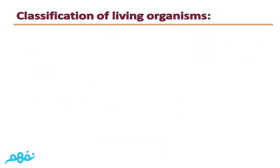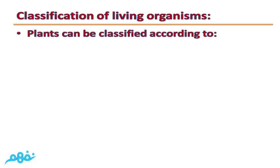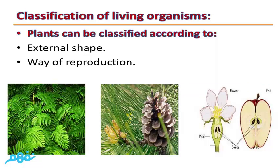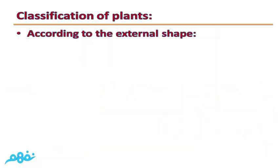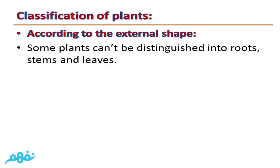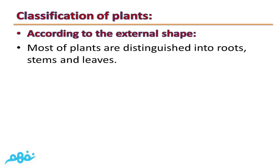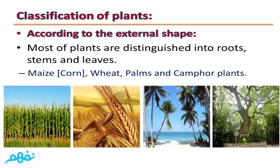Classification of living organisms: Plants can be classified according to two criteria — number one, the external shape, and number two, the way of reproduction. According to the external shape, some plants can't be distinguished into roots, stems, and leaves, such as algae, which are green, red, and brown. While most other plants are distinguished into roots, stems, and leaves, such as maize, wheat, palms, and comfort plants.